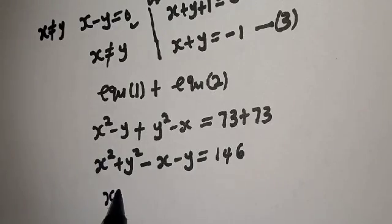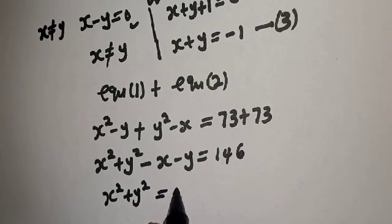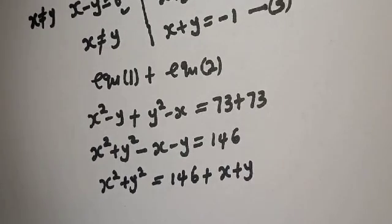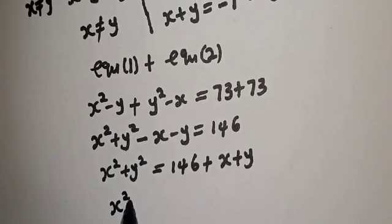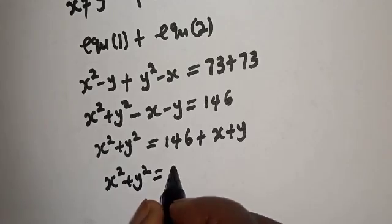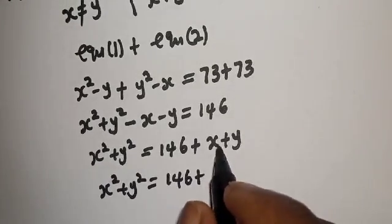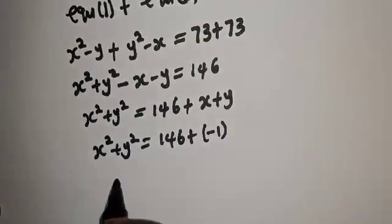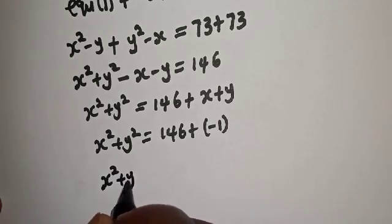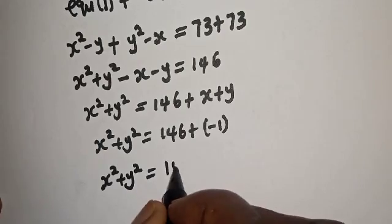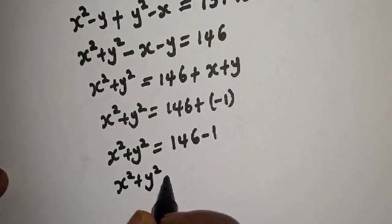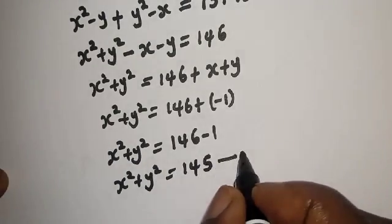So S squared plus Y squared minus S minus Y equals 146. Therefore S squared plus Y squared equals 146 plus S plus Y. Since S plus Y equals minus 1, we get S squared plus Y squared equals 146 minus 1, which equals 145. Let's call this equation 4.